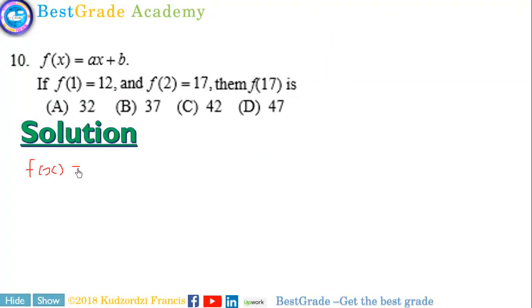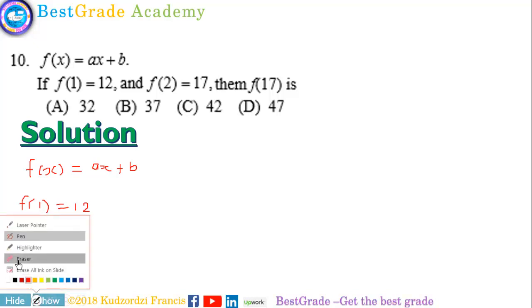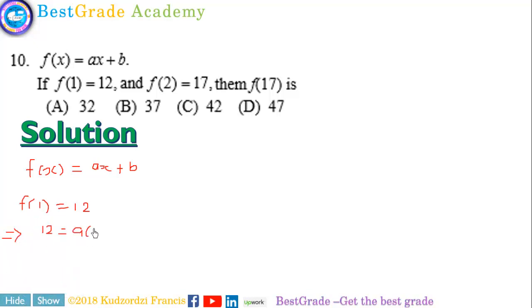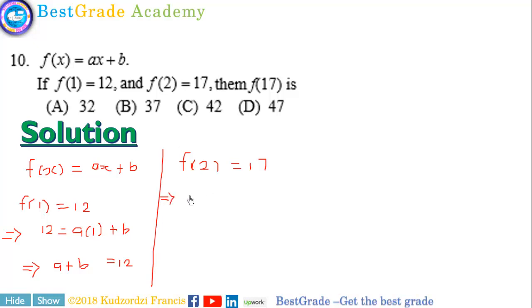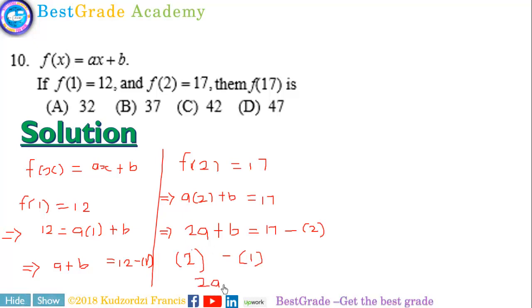We have f of x equal to ax plus b. We are given that f(1) equals 12, so we plug in 1 to obtain a plus b equals 12 — this is equation 1. We also have f(2) equals 17, so plugging in 2 gives 2a plus b equals 17 — this is equation 2. Subtracting equation 1 from equation 2 gives a equals 5.